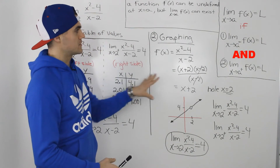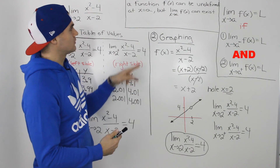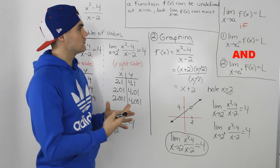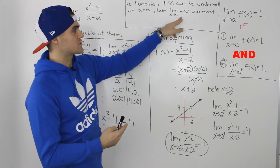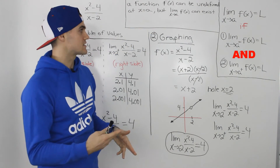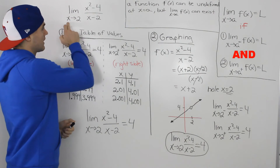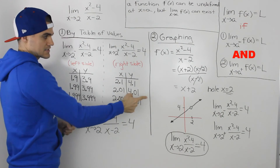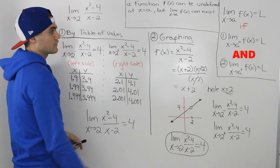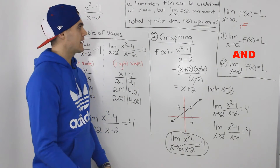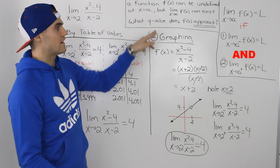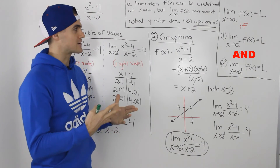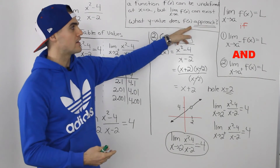A general conclusion we can make is: a function can be undefined at an x value of a, but the limit as x approaches a of that function can still exist. For example here, at an x value of 2, the function is undefined, but the limit exists as we proved in two different ways. The reason it can exist is because it's all about what y value f(x) approaches, not what y value it actually is.